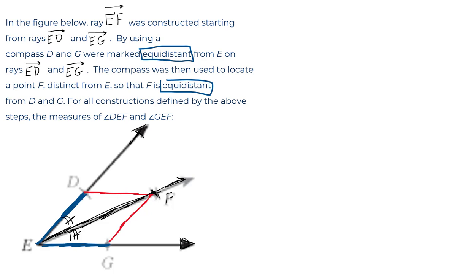So now the question: for all constructions defined by the above steps, the measures of angle DEF - that's our little one down here - and angle GEF, that's the one right next to it. The answer is they are the same, equal to each other.